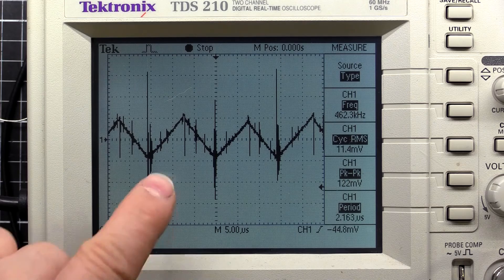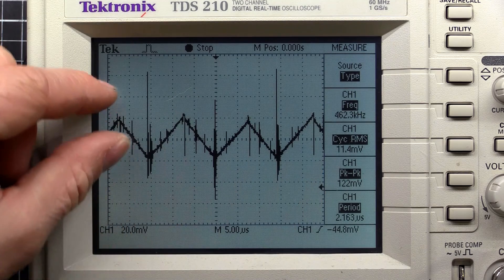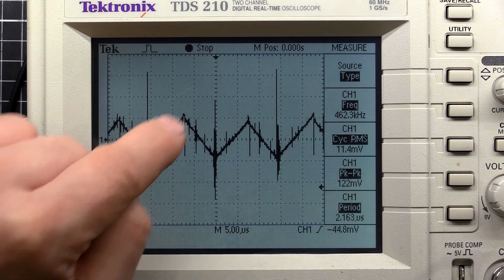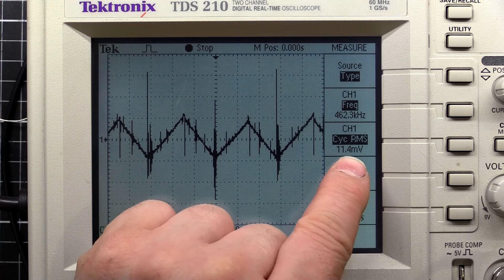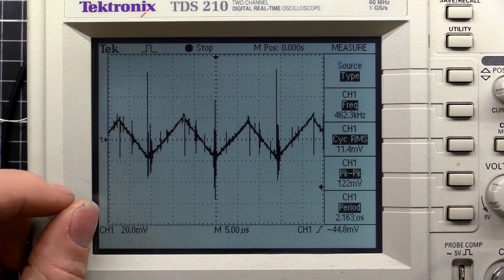So here's a waveform of our output. This of course isn't at the 5 volt level, this is zoomed right in onto the waveform. So for our RMS value we're getting 11.4 millivolts. So that's pretty small ripple for a switch mode power supply that costs three dollars.